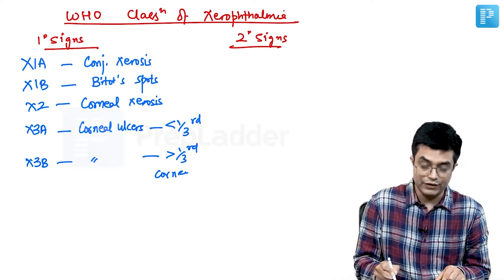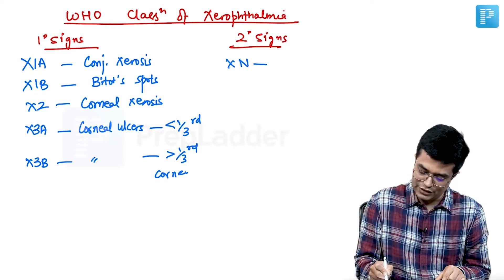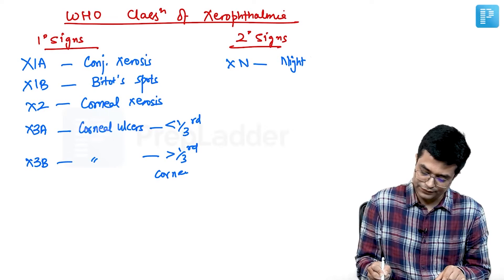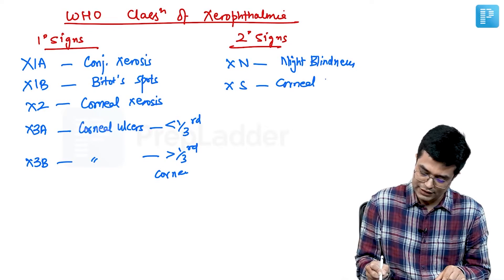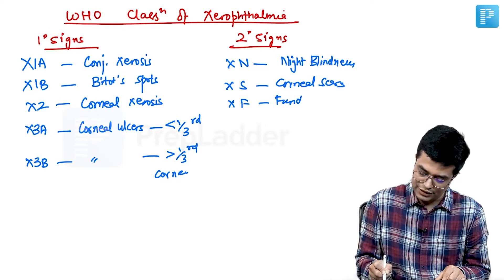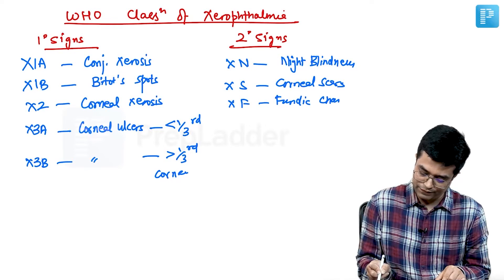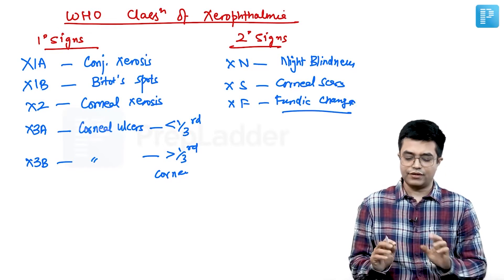Secondary signs are of three varieties. You have XN, which refers to night blindness. You have XS, which refers to corneal scars. And you have XF, which refers to fundal changes or fundic changes. Fundic changes, right? Now,